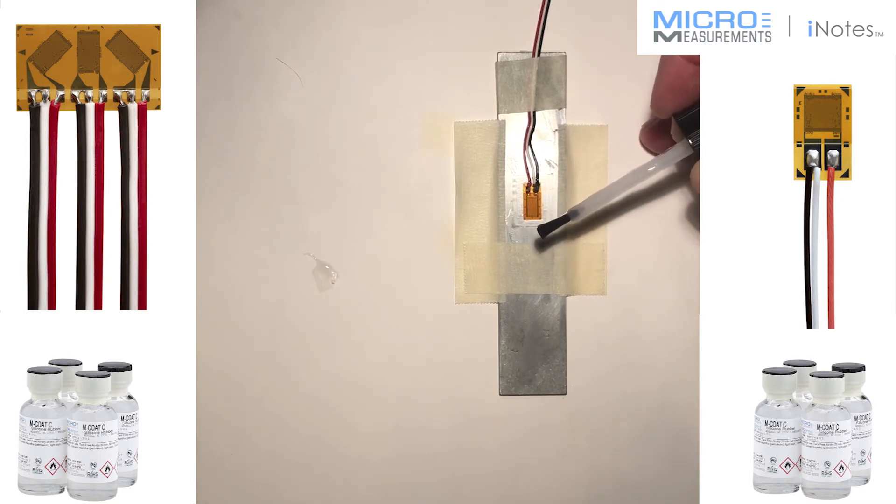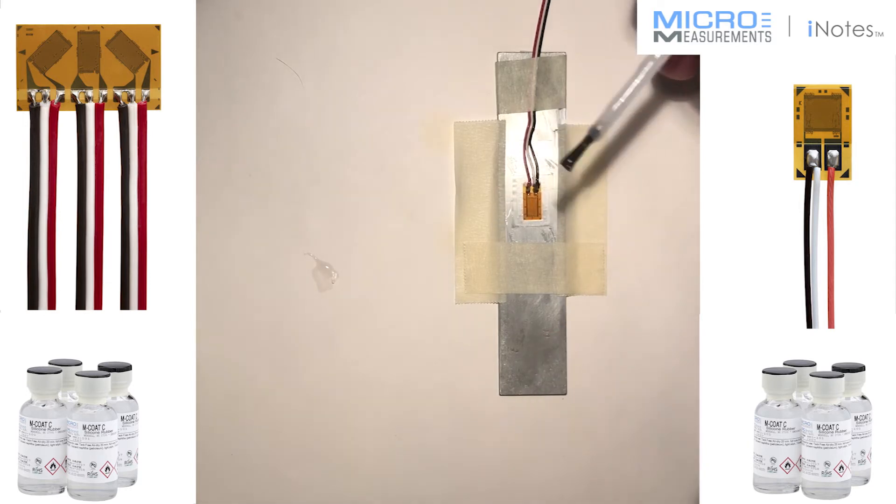I prefer to do a quarter of an inch, but because of the width of my aluminum beam, I don't have enough space. And I want to put a protective coating on top of this one, so I needed to leave a little bit of area to cover this coating with my next coating, which would be M-Coat-B.